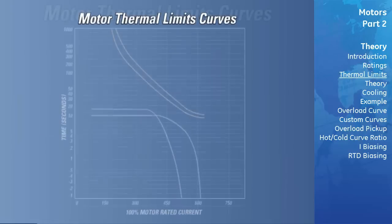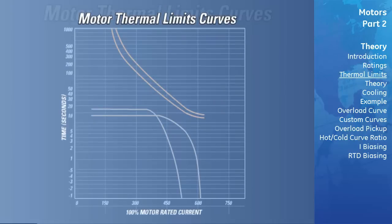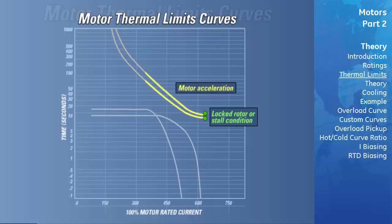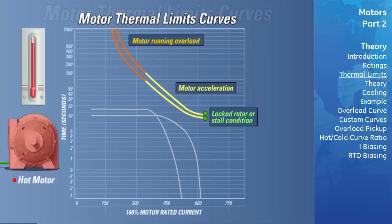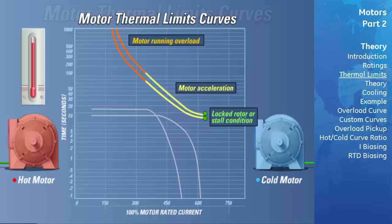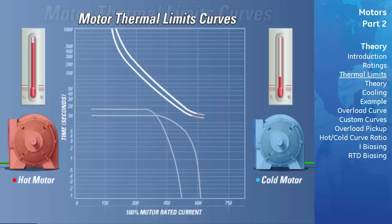The motor thermal limits curves consist of three distinct segments based on the three running conditions of the motor: the locked rotor or stall condition, motor acceleration, and motor running overload. Ideally, curves are provided for both a hot and cold motor. A hot motor is defined as one that has been running at full load such that the stator and rotor temperatures have settled at their rated temperatures. For most motors, the thermal limits are formed into one smooth, homogeneous curve.